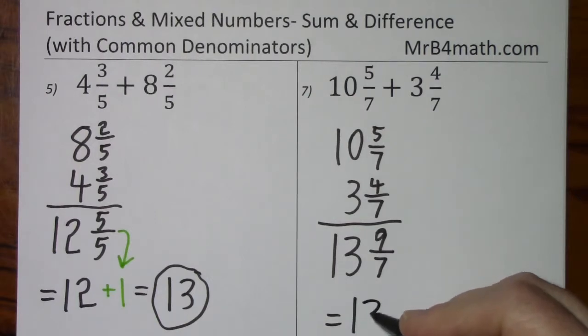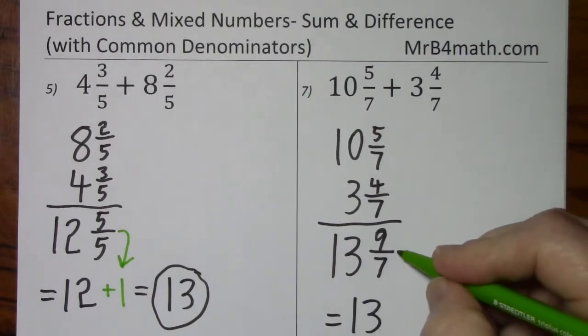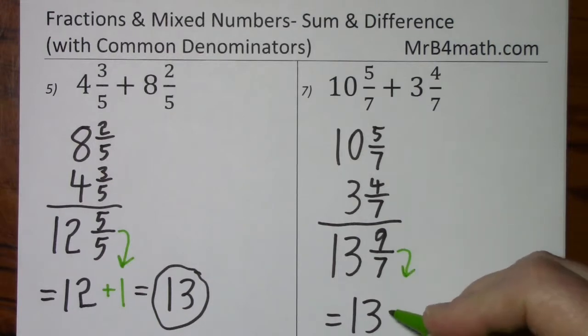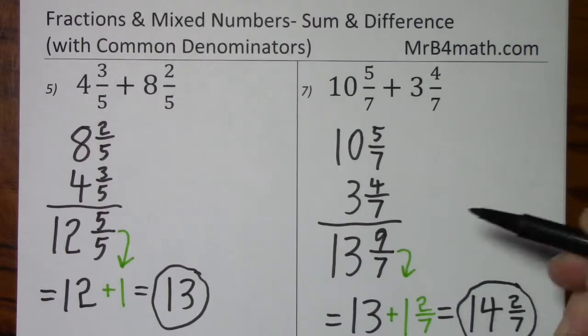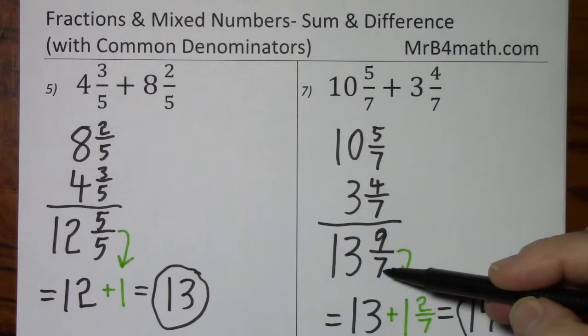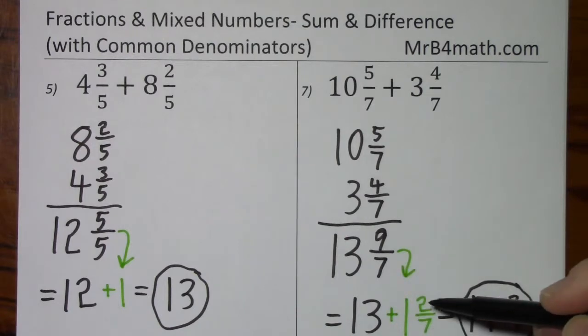This is equal to 13, and then again, this 9 sevenths, we have to add 1 and 2 sevenths. So the final answer is 14 and 2 sevenths. And real fast, this is 9 divided by 7. It goes in once with 2 left over. You keep your denominator.